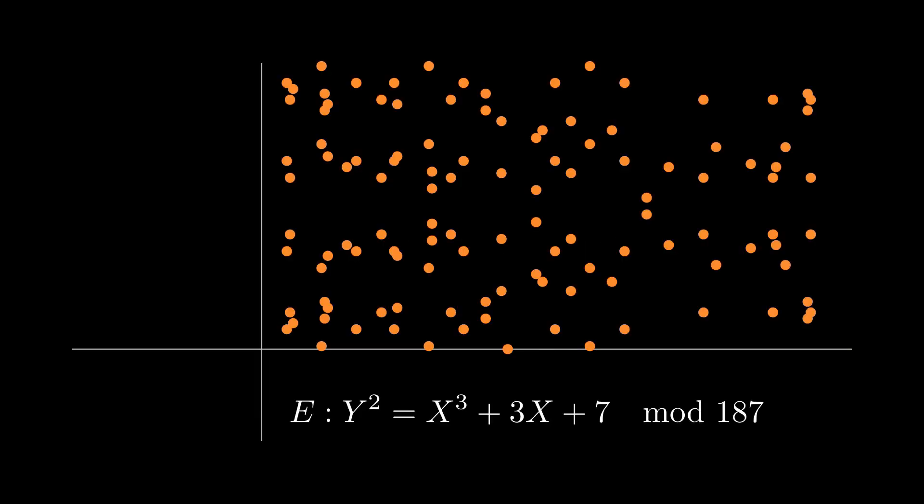The secret is to consider the case where you don't get a GCD equal to 1. That means there's a common divisor and we factored the number. But when would that ever happen?